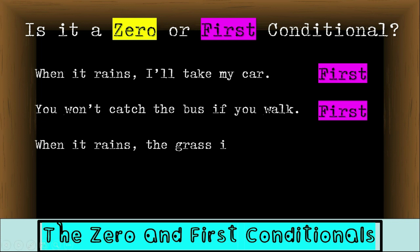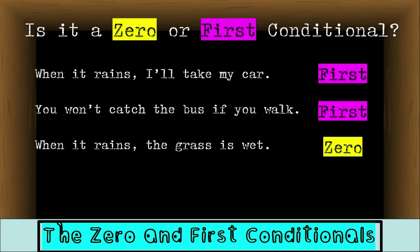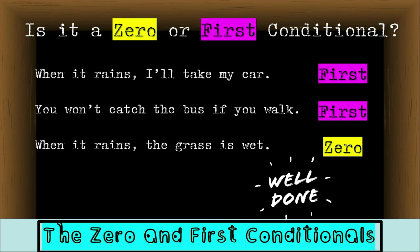When it rains, the grass is wet. Is this a factual sentence in the conditional or is it possible? This is a fact, so therefore it is the zero conditional. Thank you very much for listening today and well done.